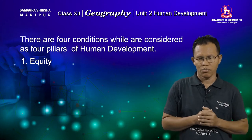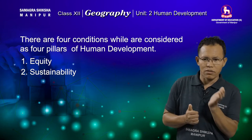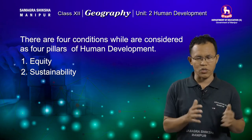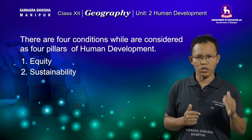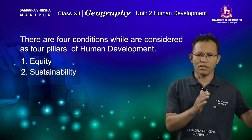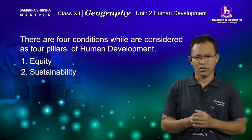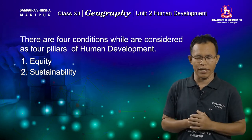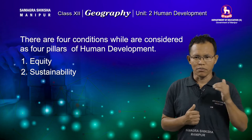The second precondition for human development is sustainability. The term sustainability refers to the continuation of the opportunities available in the country up to future generations. It means that future generations should not be deprived of those opportunities available today. If available opportunities are not extended to future generations, they have no chance of achieving human development. The third condition for human development is productivity.